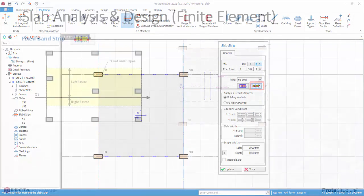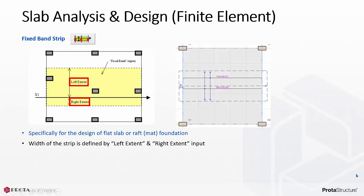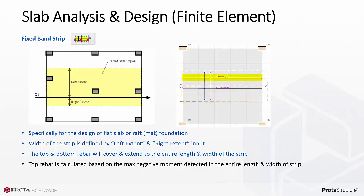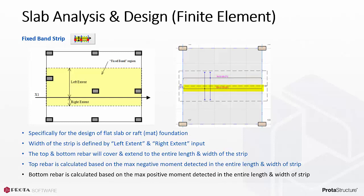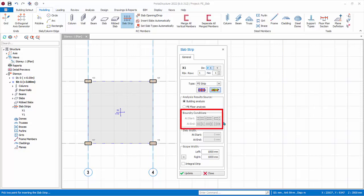The Fixed Band Strip is specifically for the design of flat slabs, rafts, or mat foundations. The width of the strip is defined by the left extent and right extent input. A single arrangement of top and bottom rebar will be designed, covering the entire length and width of the strip. Top rebar is calculated based on the maximum negative moment detected in the entire length and width of the strip. In the slab strip properties, choose X direction, and under FE Strip choose Fixed Band Strip. Under Analysis Result Source, pick Building Analysis. Boundary conditions are not applicable for Fixed Band Strip — hence they are grayed out. The extent is by default 1 meter left and 1 meter right, giving a total width of 2 meters.